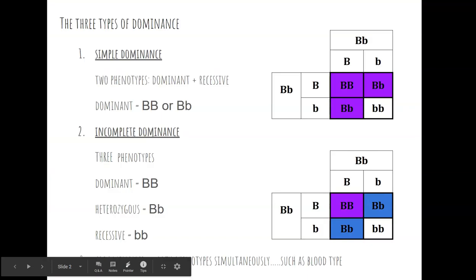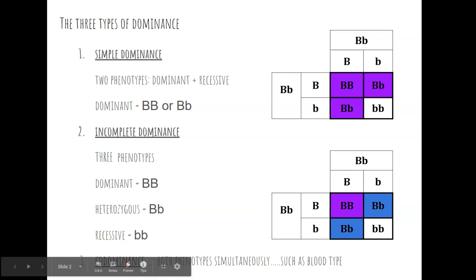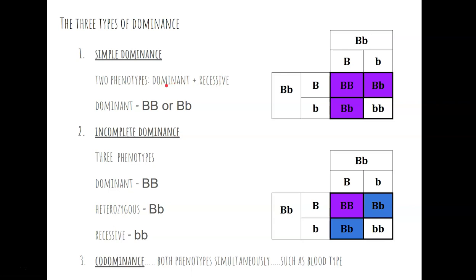When we covered the very first lecture on genetic inheritance, we were looking at Mendelian inheritance, also known as simple inheritance. With Mendelian inheritance, there are two phenotypes: a dominant phenotype and a recessive phenotype. An individual with a dominant phenotype could either have a homozygous dominant genotype (big B, big B), or they could have a heterozygous genotype (big B, little b). So if you have a monohybrid cross with simple dominance, you would get a 3 to 1 phenotype ratio of dominant to recessive.